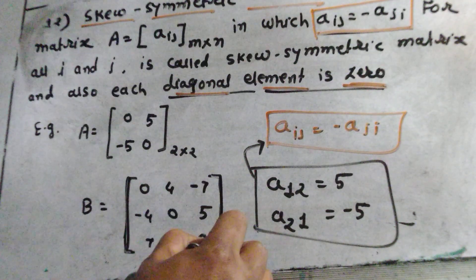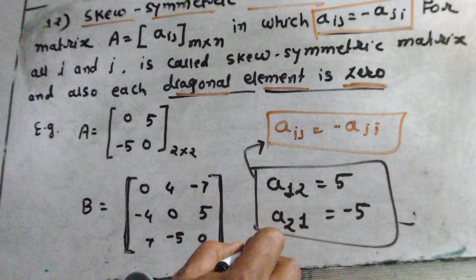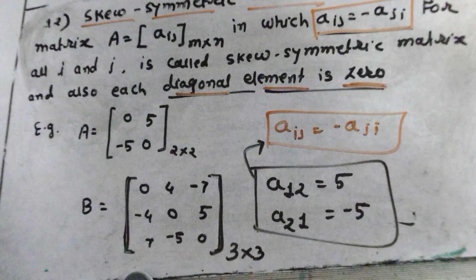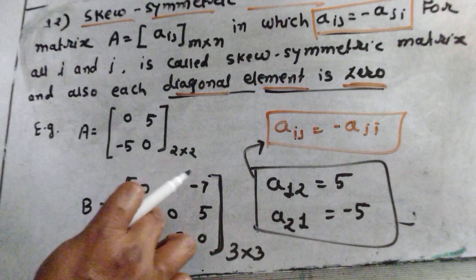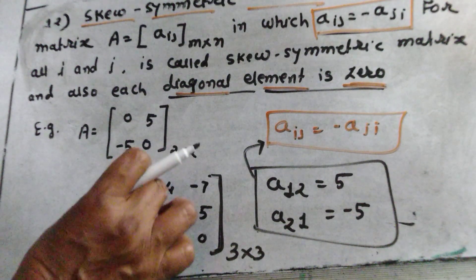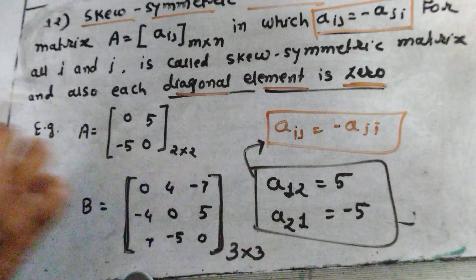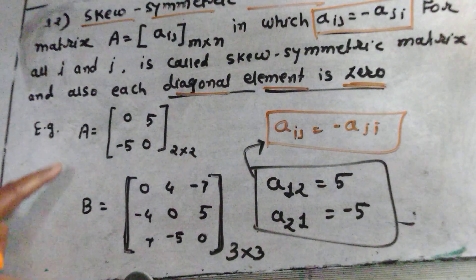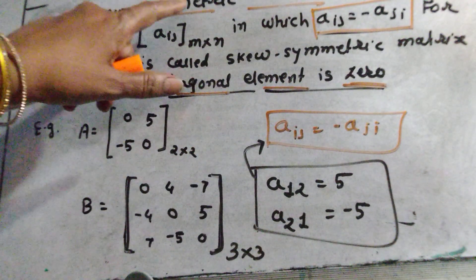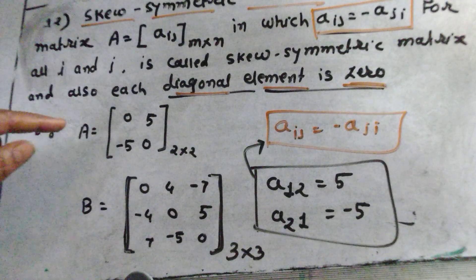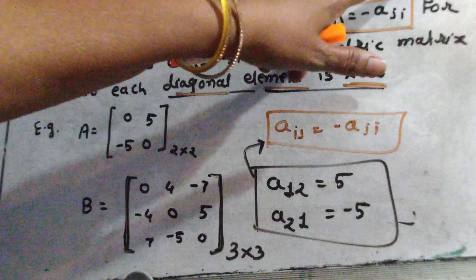And the matrix order is 3 by 3, because here are 3 rows and 3 columns: first row, second row, third row, first column, second column, and third column. So this matrix is a skew-symmetric matrix and it is a square matrix.